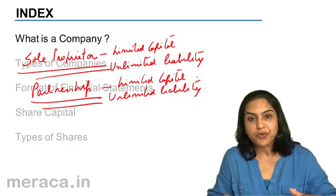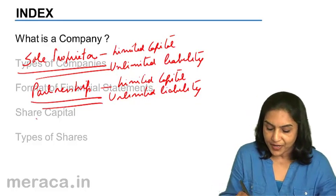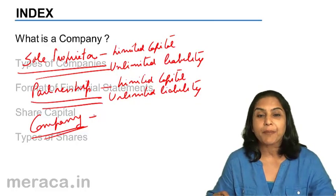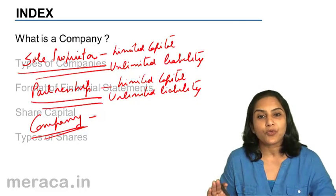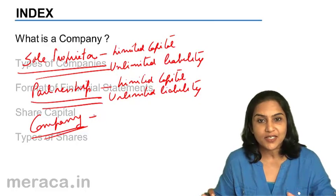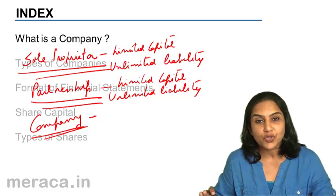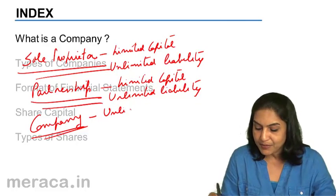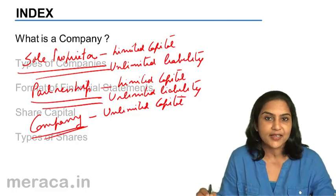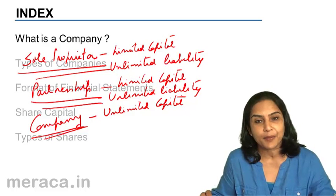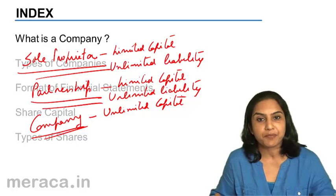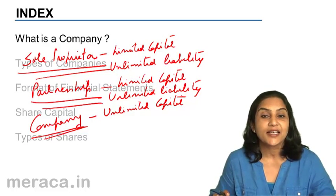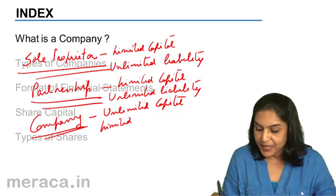From a sole proprietorship, the business structure has evolved to a partnership, and now we have another form of business organization called a company. In case of a company, capital can be raised from any number of people all over — not necessarily in the city where the company is registered, not just the state or country; even investors from all around the world could put in capital. So capital becomes unlimited. At the same time, the company form of business is structured such that each owner's liability is restricted to the amount of capital that he has invested. So we have unlimited capital and limited liability.